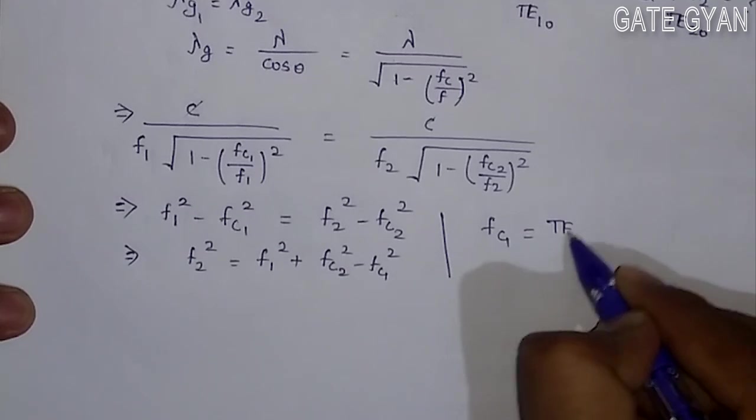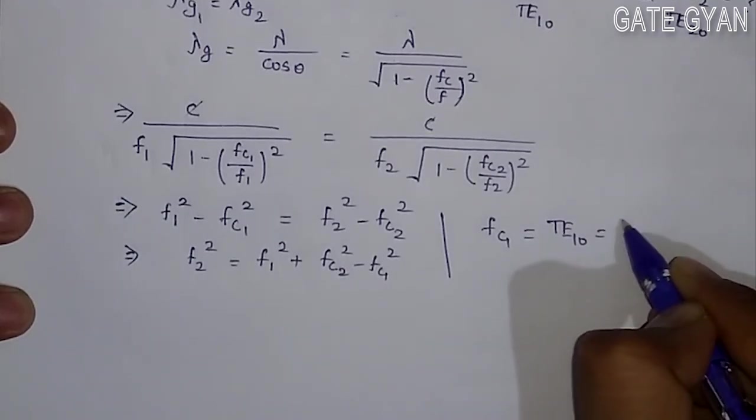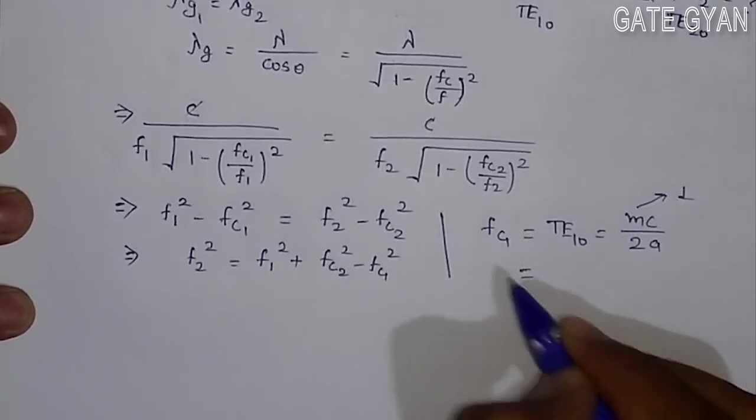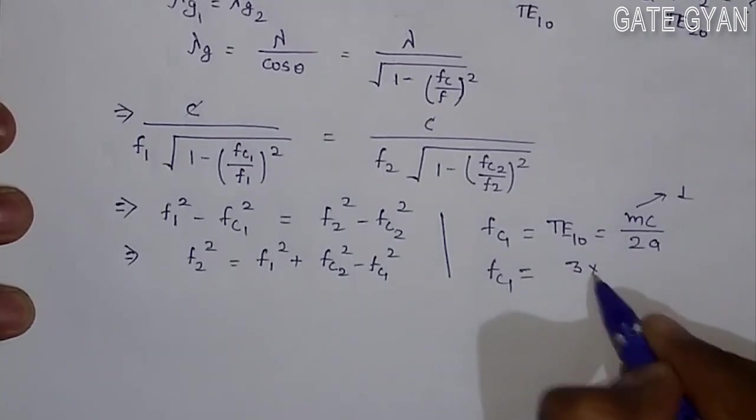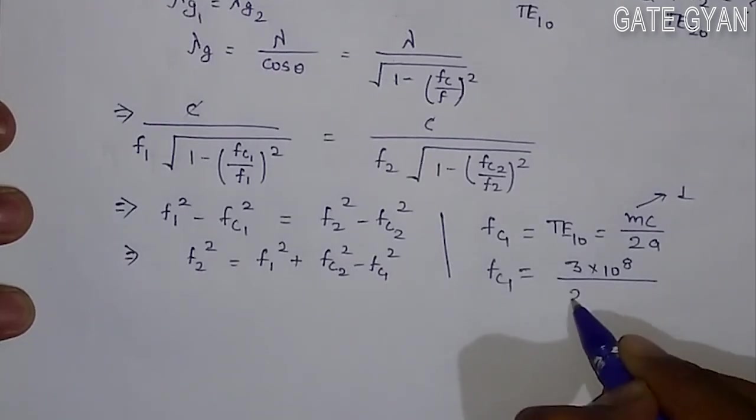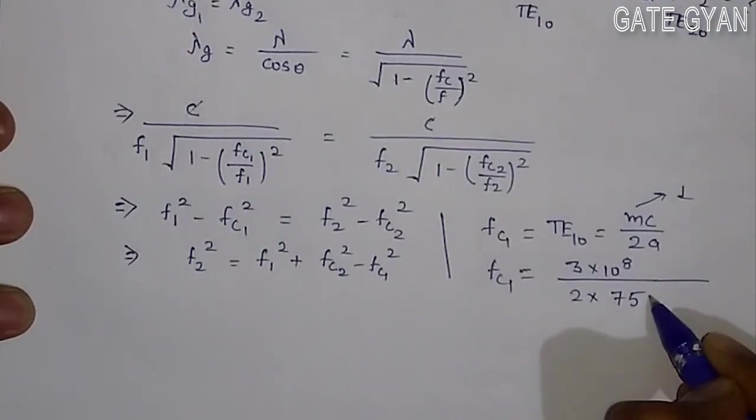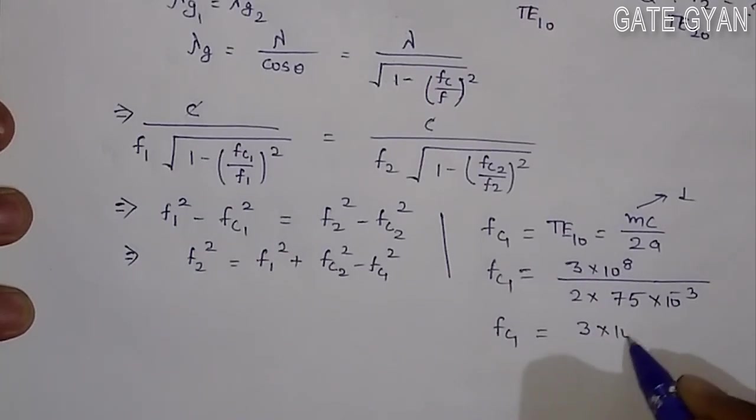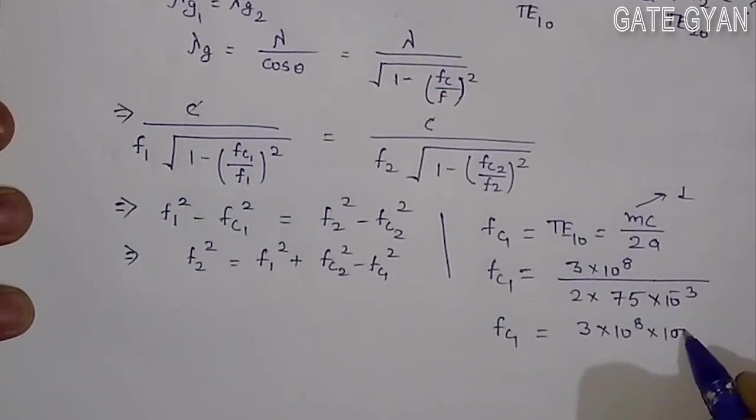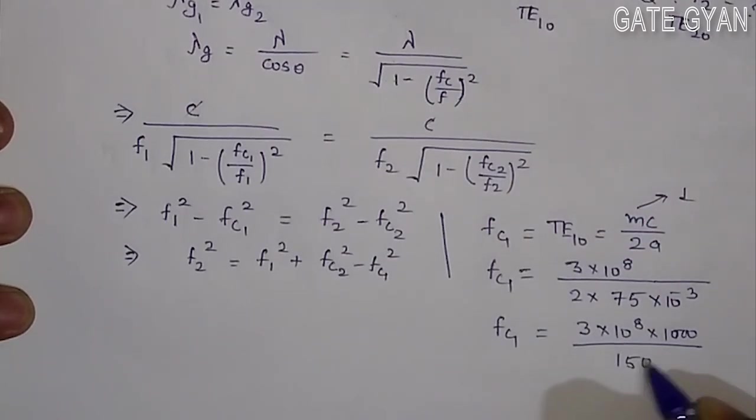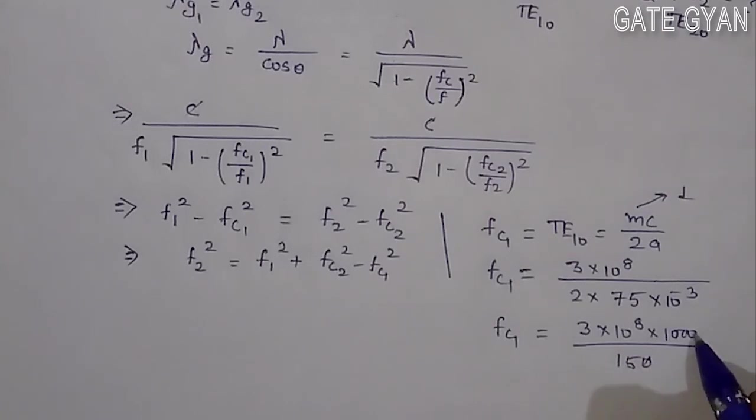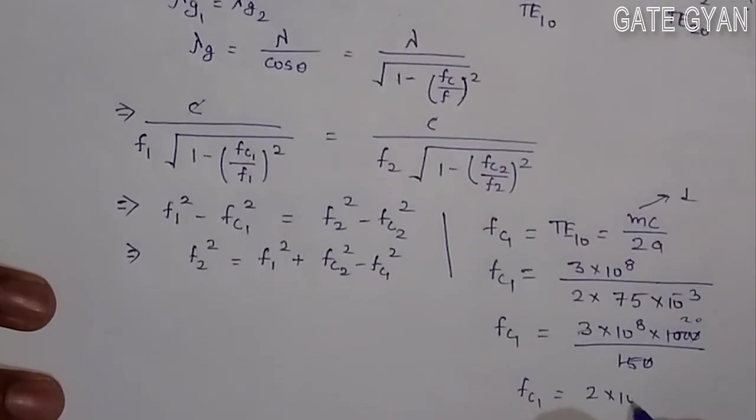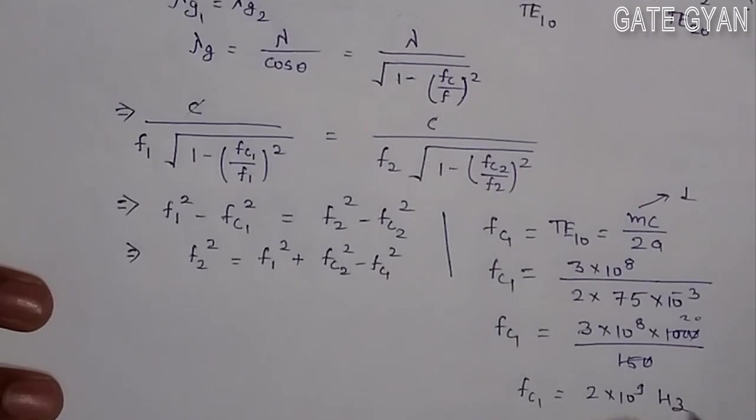Let us find out FC1. FC1 for TE10 mode will be given as MC by 2A where M is 1, so it is C divided by 2A. FC1 equals 3 into 10 to power 8 meter per second divided by 2 into A. A is given as 75 into 10 to power minus 3. If you solve it further, you get 3 into 10 to power 8 into 10 to power 3, which is 1000, divided by 150. This gives 2 into 10 to power 9, which is 2 gigahertz. So FC1 is 2 gigahertz.